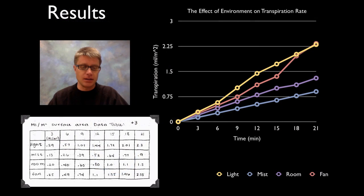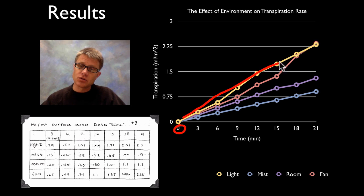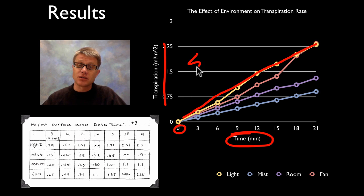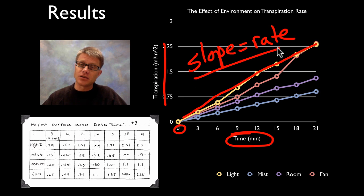Basically what we find, this is data that was collected in class. At time 3, 6, 9 all the way through 21 minutes, we should start at 0 as well. What we get is a fairly linear relationship. The slope of this line, since we are going over time and we're measuring millimeters per meter squared, the slope of that line is going to give me the rate. So slope equals the rate. In other words, the steeper the slope the faster the rate.